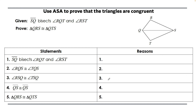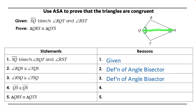Let's dive into our first proof using angle-side-angle. We know that SQ bisects angle RQT and angle RST — that's given. Statement two: angle RQS is congruent to angle TQS because the angle bisector creates two congruent angles. Same reason for angles RSQ and TSQ — the angle bisector QS created those congruent angles.